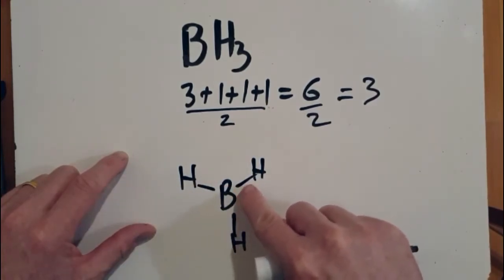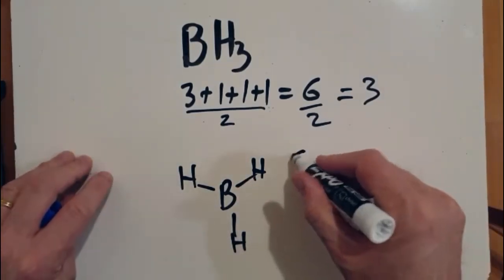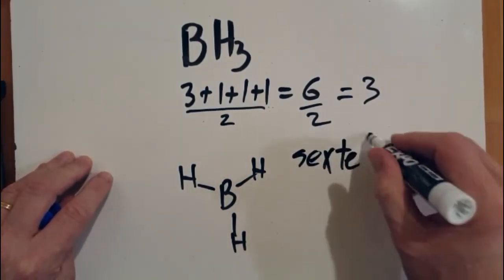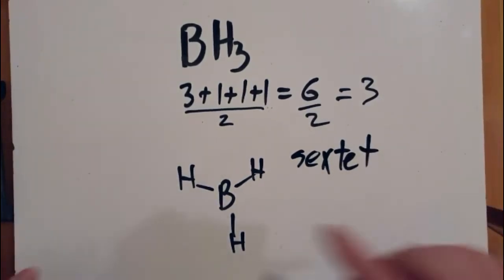Hydrogen is satisfied by having one pair of electrons. It has two electrons in a full outer shell. But boron, well boron is unusual. Boron can have a stable sextet. That means boron can be stable with six electrons in its outer shell.